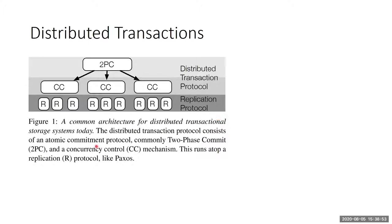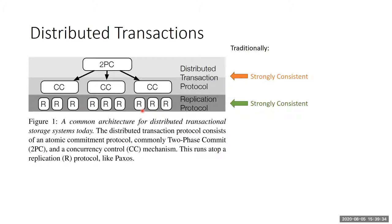Traditionally, you would have replicated data in each partition, some kind of concurrency control mechanism to decide the order of transactions, and then a distributed transactional protocol like 2PC. Normally, both the distributed transactional protocol and the replication protocol are strongly consistent. This makes it easier to develop systems — if you have Paxos, you can imagine three replicas as just one replicated state machine behaving like one computer, making it easier to reason about the distributed transaction protocol built on top.